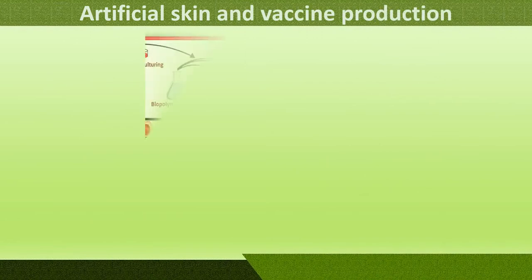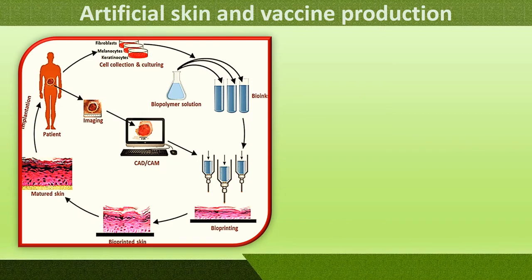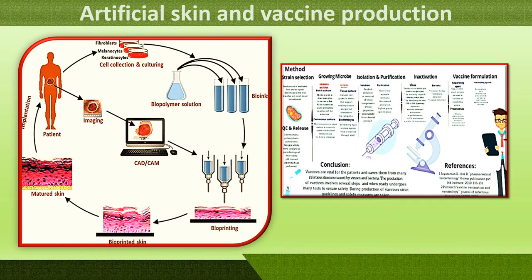For artificial skin production, imaging of burnt or wounded skin is done using a computer to determine the skin texture. Skin cells are then collected, cultured in different solutions, and bioprinted to make a similar type of skin from the patient. This bioprinted skin is matured and finally transplanted or implanted on the body of the patient who requires it. Similarly, vaccine production follows many procedures in biotechnology.